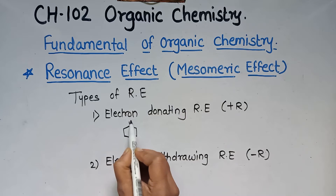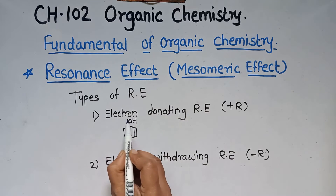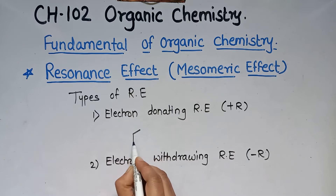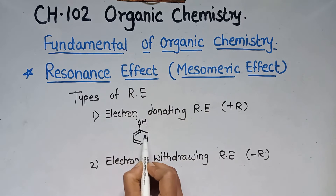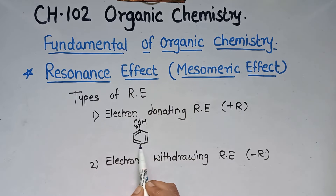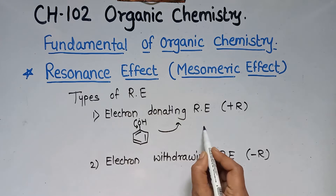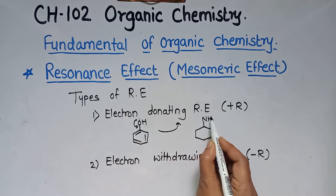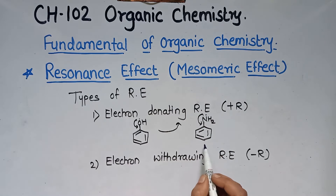We consider the example of phenol. The oxygen in phenol is an electron-rich species, so it donates electrons to the benzene ring. That's why electron density increases on the benzene ring — hence, this shows the +R effect, that is, the electron donating resonance effect. Similarly, in aniline, the nitrogen has a lone pair, making it electron-rich, and it donates electrons to the benzene ring — also an example of the +R effect.